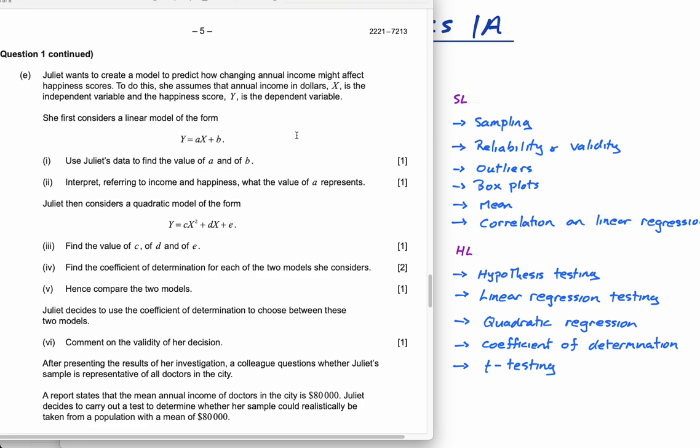So she then wants to create a model to predict how changing annual income might affect happiness scores. This is modeling. It's linear regression modeling. To do this, she assumes that annual income in dollars, x, is the independent variable. And the happiness score, y, is the dependent variable. You can talk about that. That makes sense. Are we saying that income makes you happy, or making you happy gives you more income? I guess the whole point of this is to check that if you earn more, is it making you happier? So the income is the independent, the happiness is the dependent. So she uses this linear model.